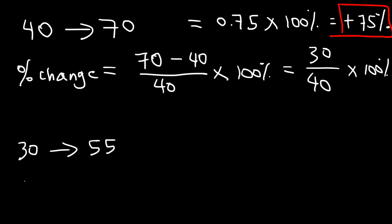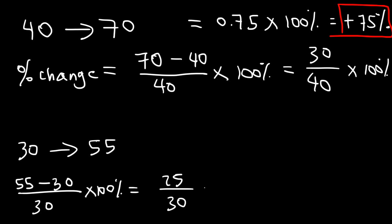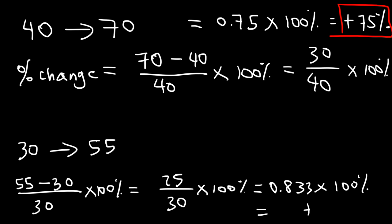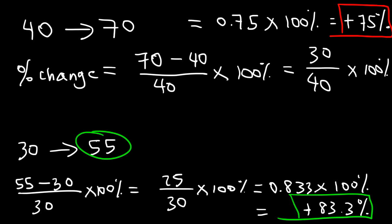Let's try the second example. The percent change is going to be the new value, which is 55, minus the original value of 30, divided by the original value, times 100%. 55 minus 30 is 25, so we have 25 divided by 30. If you type 25 divided by 30 in your calculator, you should get 0.83 repeating. Multiply that by 100% and you get positive 83.3%. That too represents a percent increase. Any time the new value exceeds the original value, it will always be a percent increase — your percent change has to be positive. If it's negative, then it's a percent decrease.